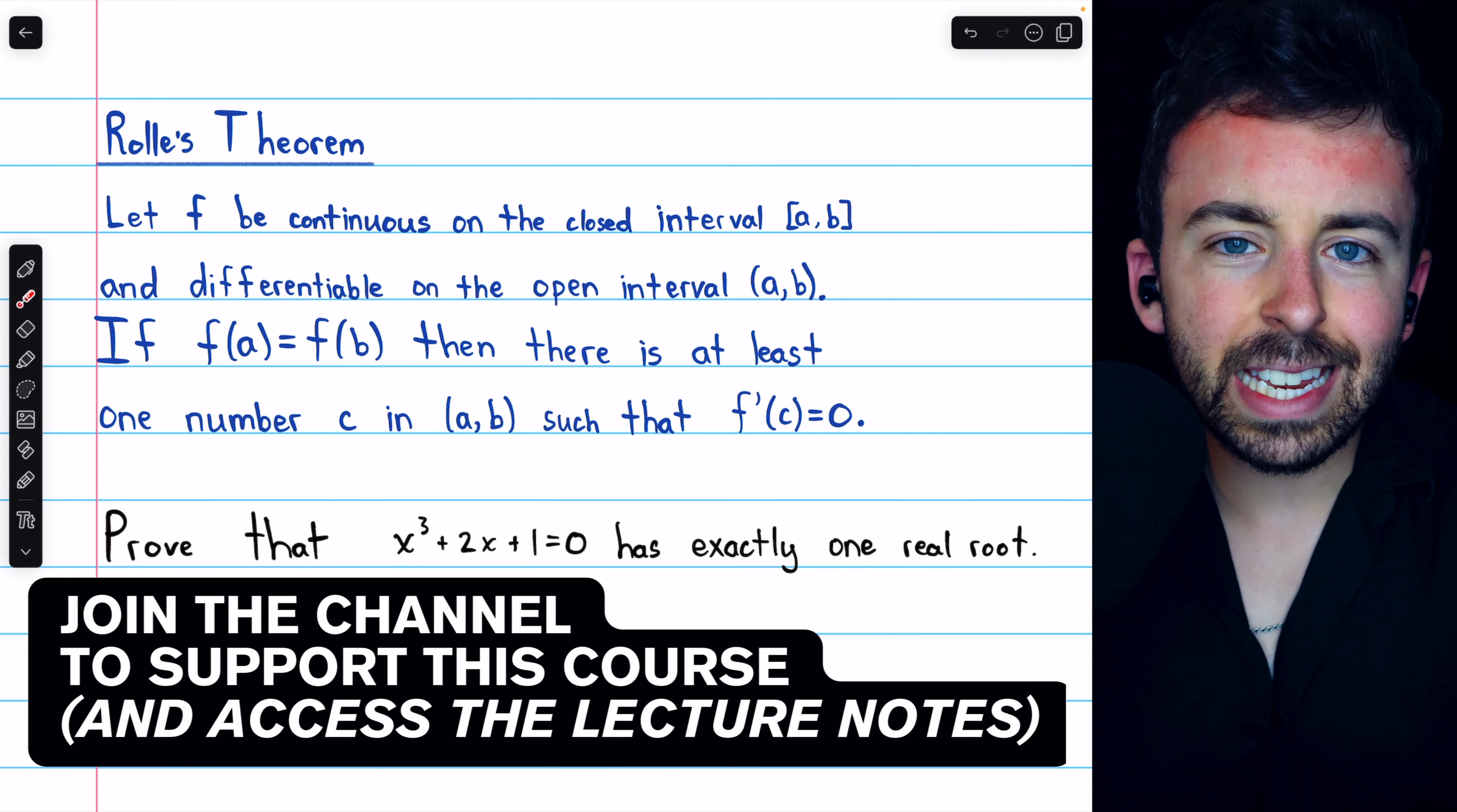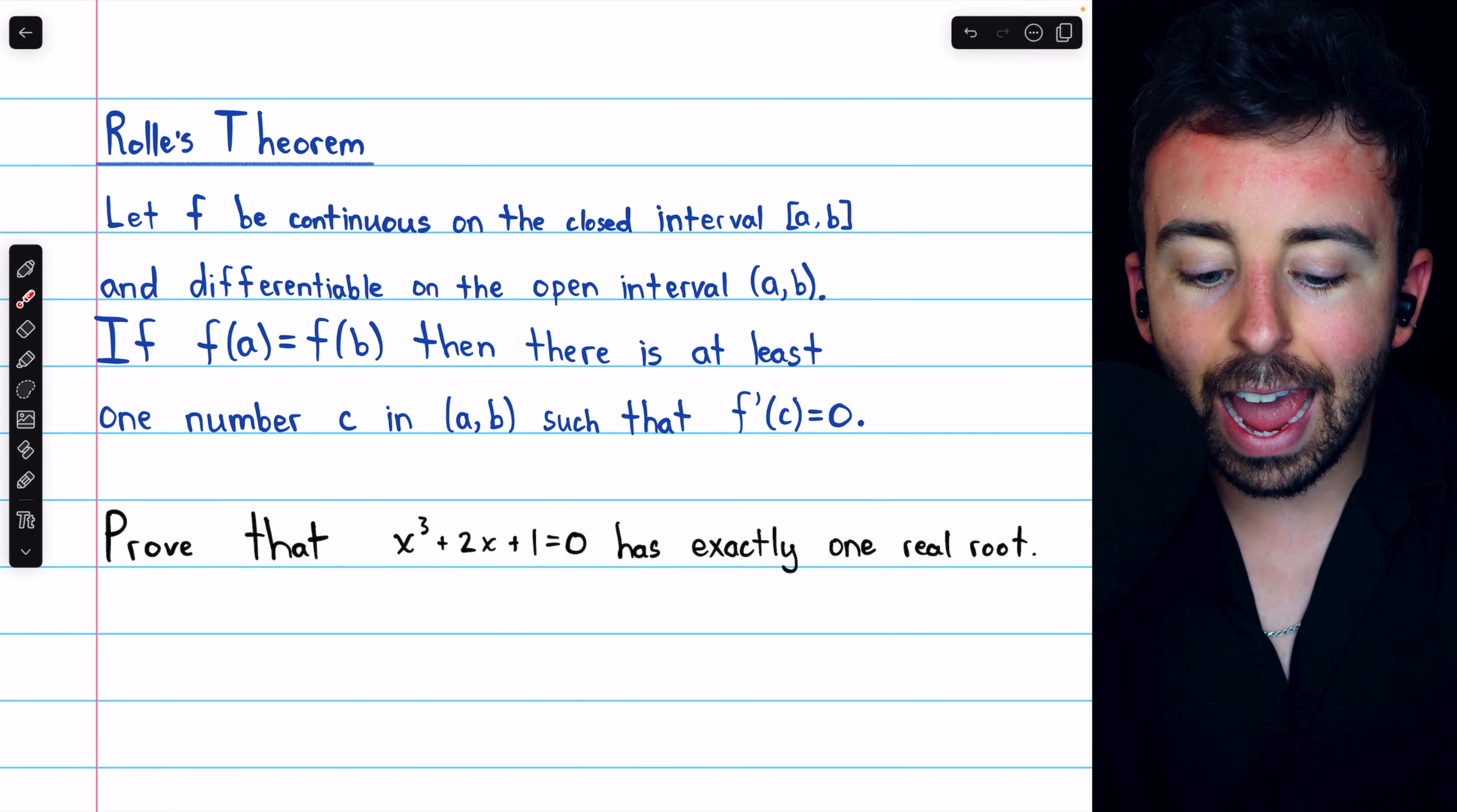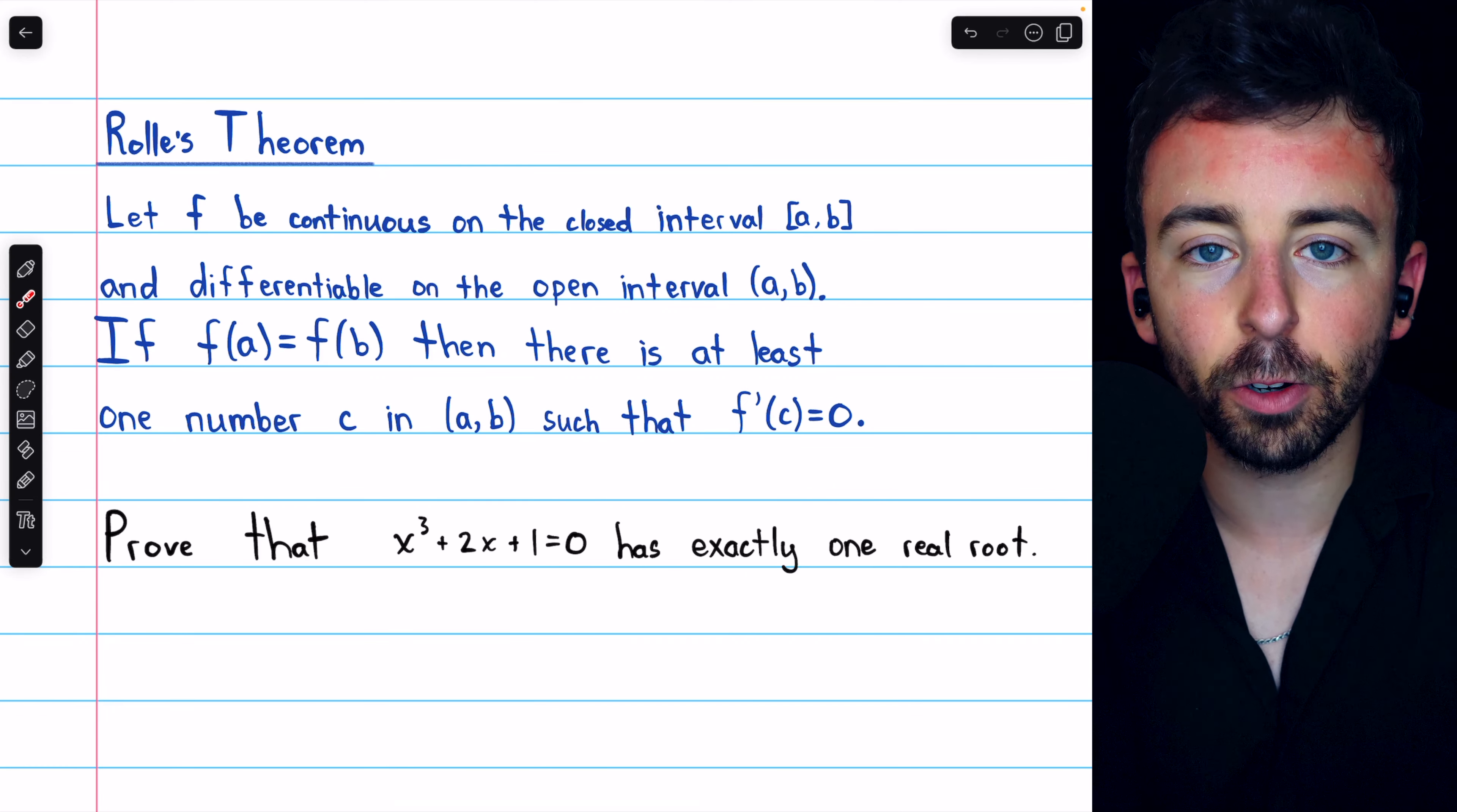This is Rolle's theorem. It tells us that if a function is continuous on a closed interval from a to b, and differentiable on that same open interval, and if its endpoints on the interval are equal, then there must be at least one number c in the interval, such that the derivative at c is equal to zero.